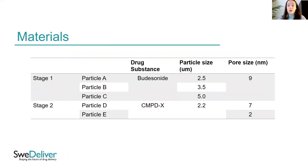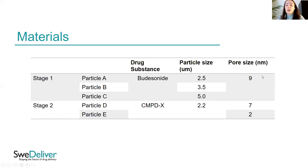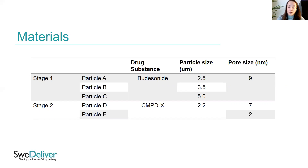For the materials used in the different stages: Stage one involved three different particles — A, B, and C — all loaded with budesonide. Particle sizes ranged from 2.5 micrometers for particle A, to 3.5 micrometers for particle B, and 5.0 micrometers for particle C. They all had a pore size of 9 nanometers. For the second stage, two particles with the same particle size of 2.2 micrometers but different pore sizes were used, both loaded with CMPD-X, a novel drug candidate. Particle D had the largest pore size of 7 nanometers and particle E had a pore size of 2 nanometers.